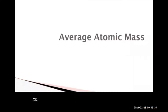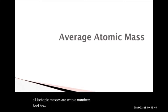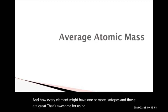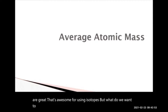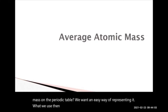We've been talking about isotopes and isotopic mass, and how all isotopic masses are whole numbers, and how every element might have one or more isotopes. But what do we want to do when we just want to use one number or an atomic mass on the periodic table? We want an easy way of representing it. What we use then is an average atomic mass.